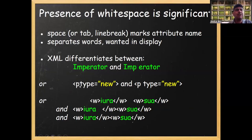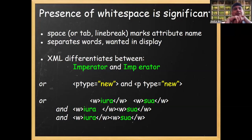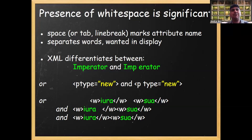White spaces are significant in XML. Between the name of your element and any possible attributes within the opening tag of the element, you should put a space. So if you have an element called paragraph and you want to indicate an attribute type equals new, make sure to have a white space between P and type. Otherwise, it will be read as an element name. P-type-new will be perceived by the processing program of the XML file as an element name.